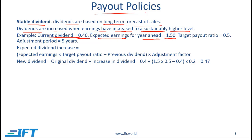We expect earnings to go up and we expect this higher earnings level to be sustainable. The target payout ratio is 0.5. The adjustment period is 5 years, which means that the adjustment factor will be 1 over 5, or 0.2.